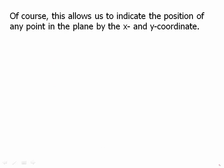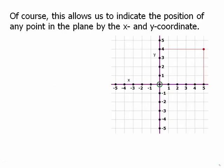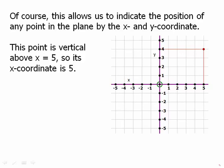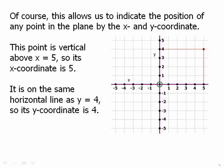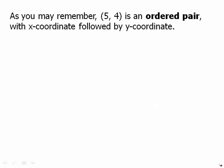This allows us to indicate the position of any point on the plane by the x and y coordinate of the point. For example, this particular point is vertically above x equals 5, so the x coordinate has to be 5. It is on the same horizontal line as y equals 4, so its y coordinate is 4. Its position is given by the ordered pair (5, 4), with the x coordinate first, then the y coordinate — they're in alphabetical order.